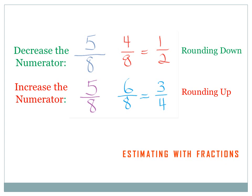The first rule is you can try decreasing the numerator. Let's look at 5 eighths. If we decrease the numerator by 1, we get 4 eighths. I can see that 4 eighths is 1 half, and 1 half is an easy number to multiply by. So let's use 1 half as an estimate for 5 eighths. It's important to remember that we've rounded down — 4 eighths is less than 5 eighths. Another rule is to increase the numerator. Starting with 5 eighths, let's increase the 5 to a 6, giving us 6 eighths, which equals 3 quarters. And 3 quarters is an easy number to multiply by, so let's round it up to 3 quarters.